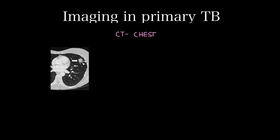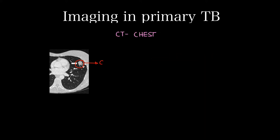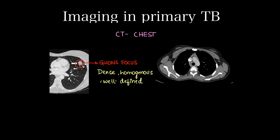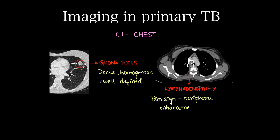On CT chest we can see the Ghon's focus as a dense, well-defined, peripheral homogenous nodule. The lymphadenopathy associated with Ghon's focus shows a rim sign — peripheral enhancement with central non-enhancing necrotic areas. It can also show heterogeneous enhancement.